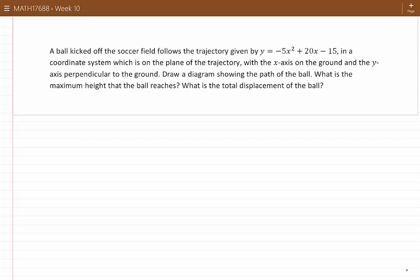A ball kicked off the soccer field follows the trajectory given by y equals minus 5x squared plus 20x minus 15 in a coordinate system which is on the plane of the trajectory with the x-axis on the ground and the y-axis perpendicular to the ground. Draw a diagram showing the path of the ball. What is the maximum height that the ball will reach?